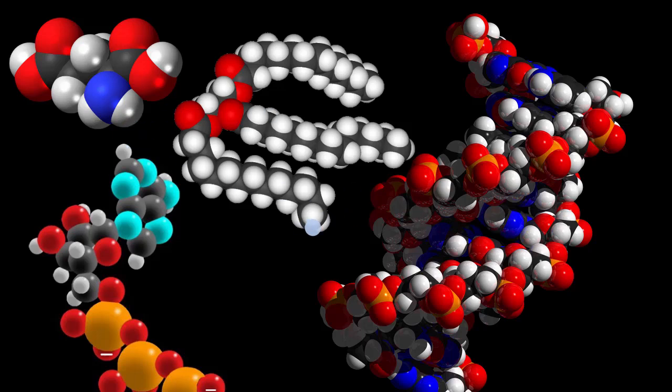What we have here is just a small sample of the types of molecules that you will see in a biological system. At the top left right over here, you have an example of an amino acid.